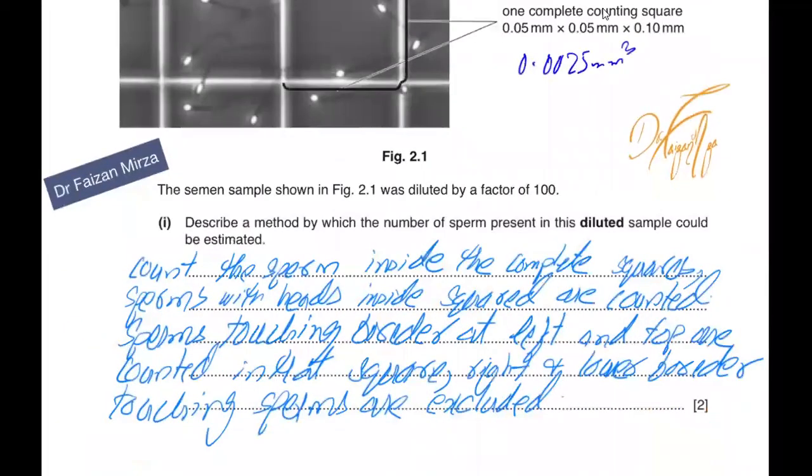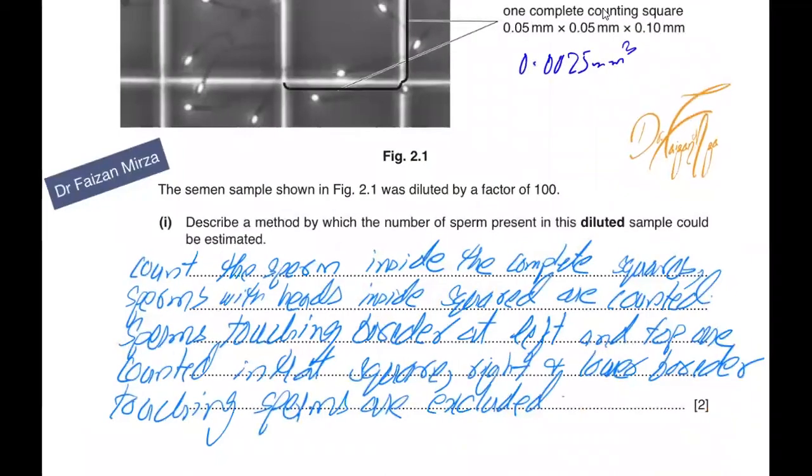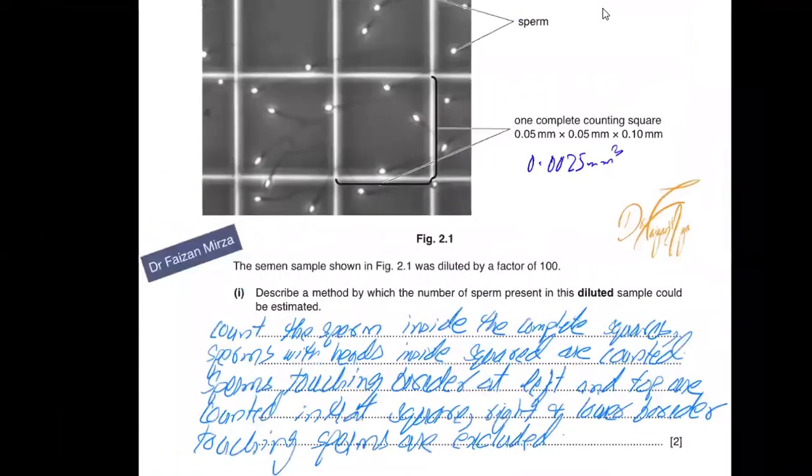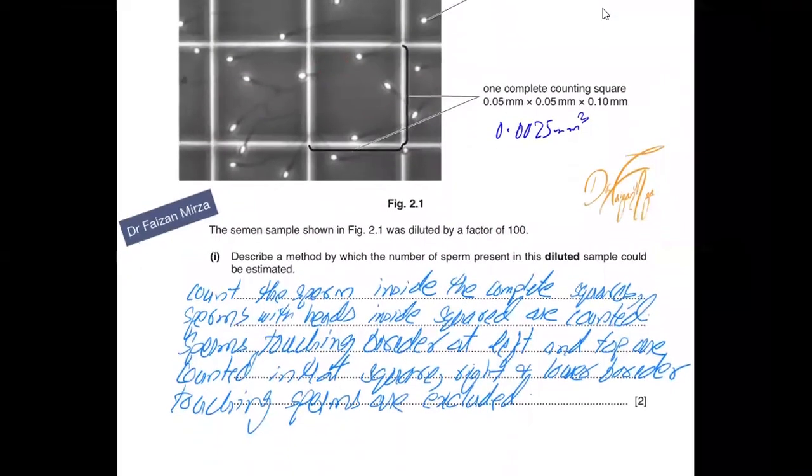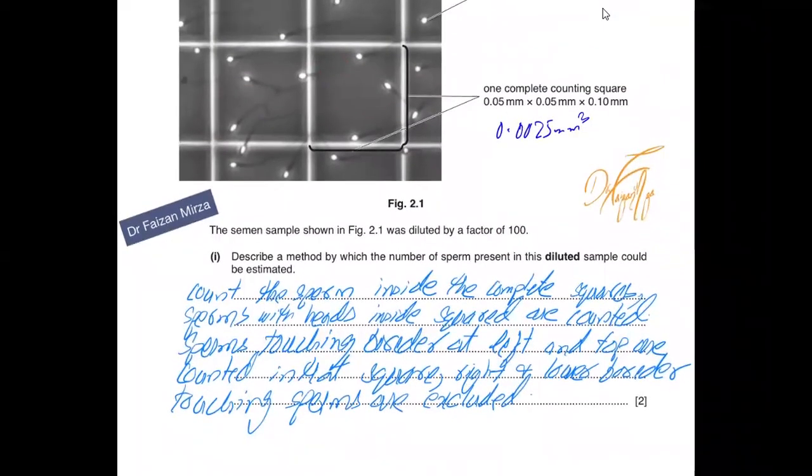The semen sample shown in Figure 2.1 was diluted by a factor of 100, meaning it was 100 times diluted. The cells you count are diluted by 100 times, so these are not the actual count in the original semen sample but a diluted sample. Describe a method by which the number of sperm present in the diluted sample could be estimated.